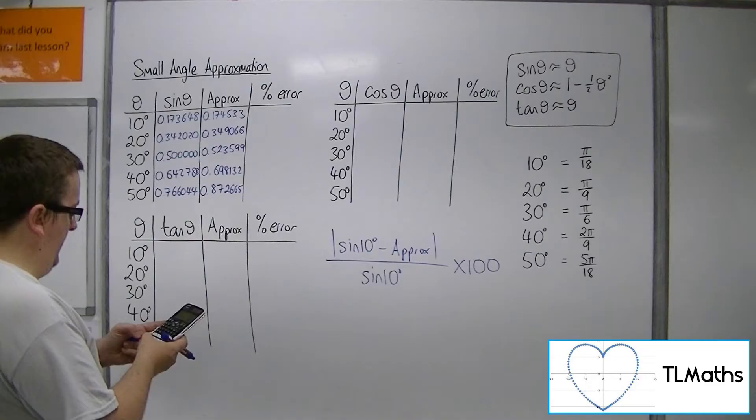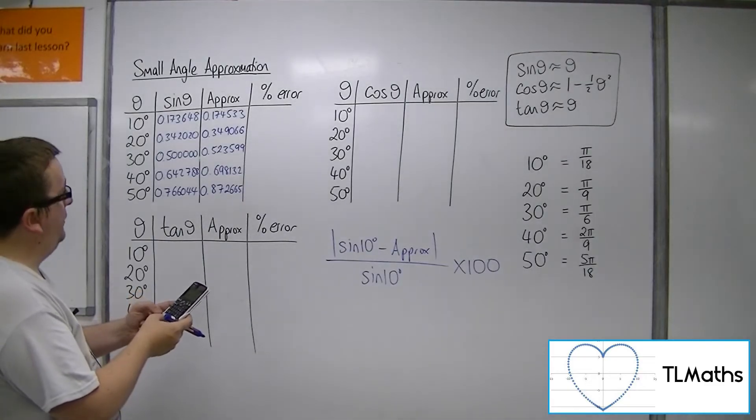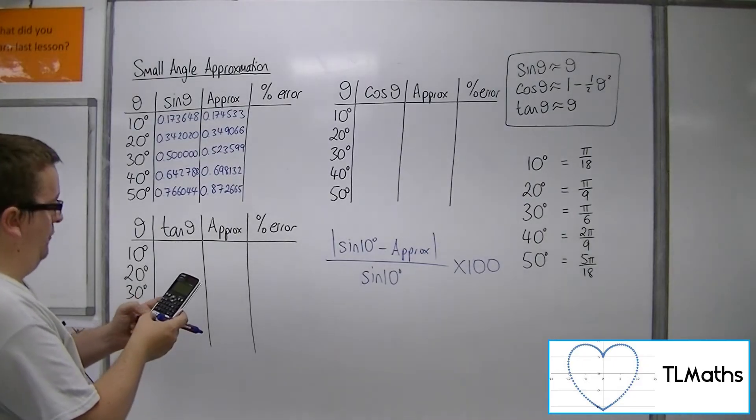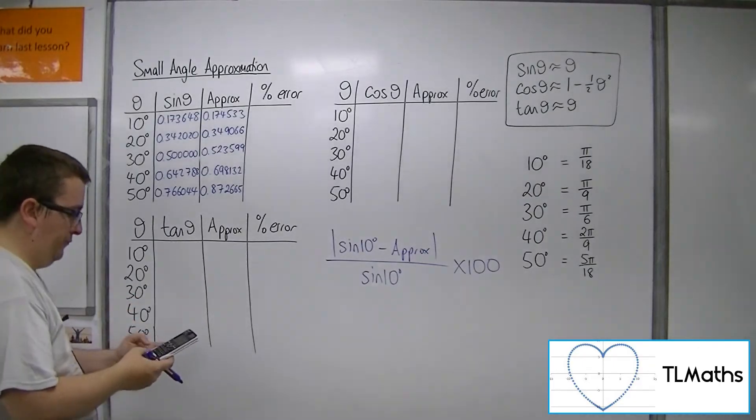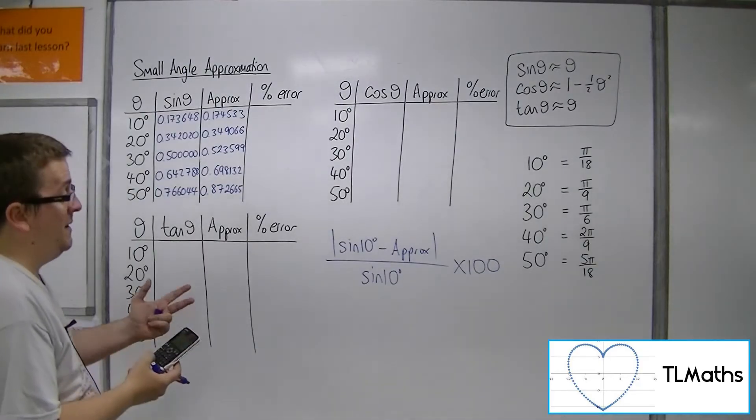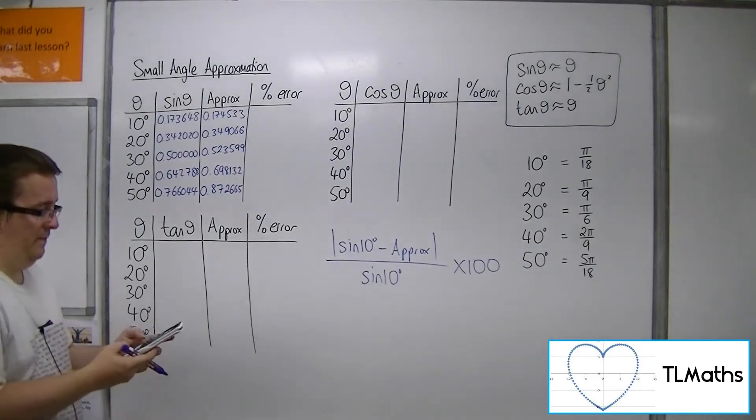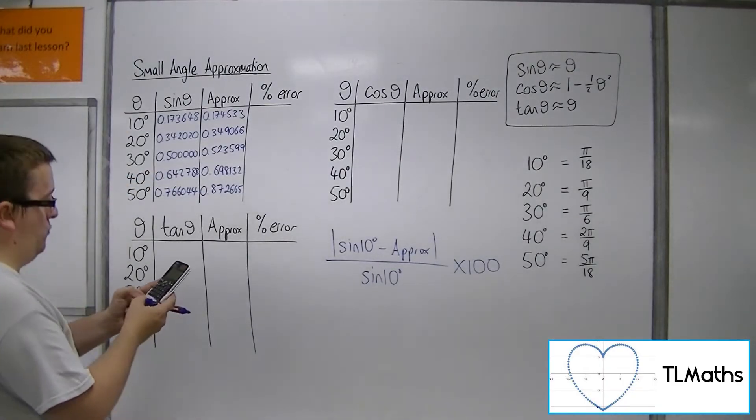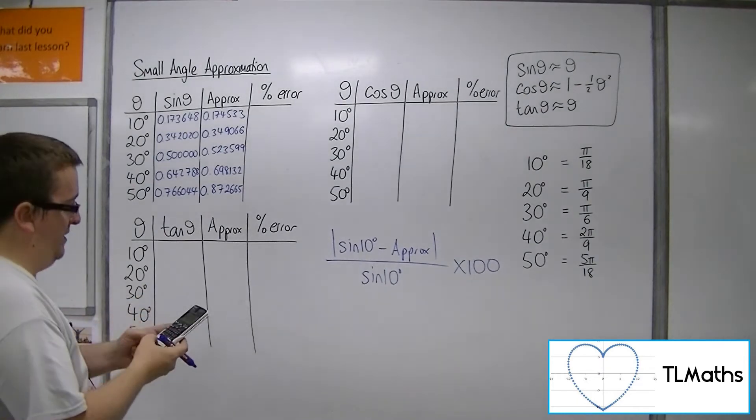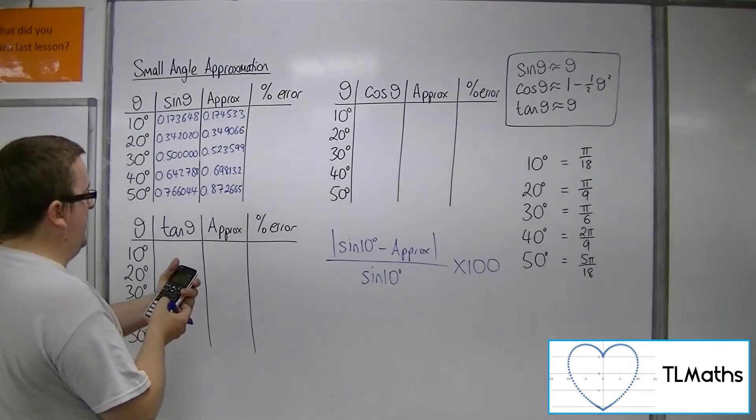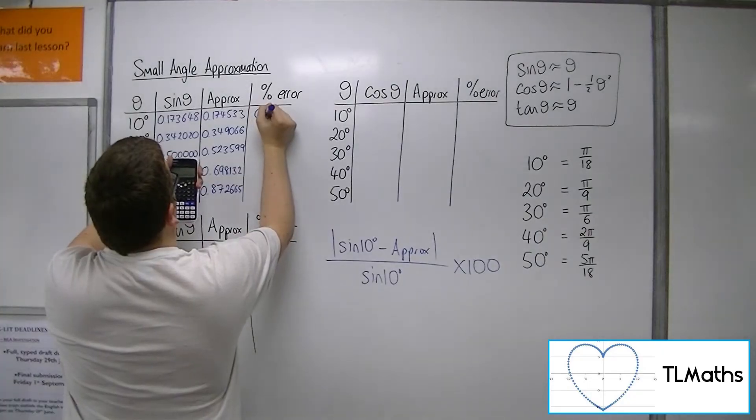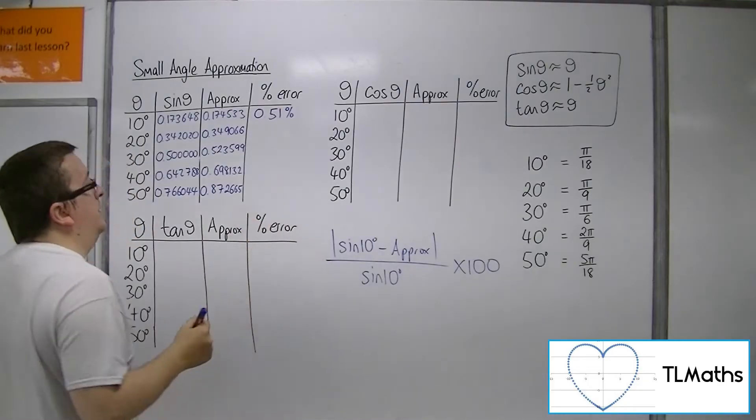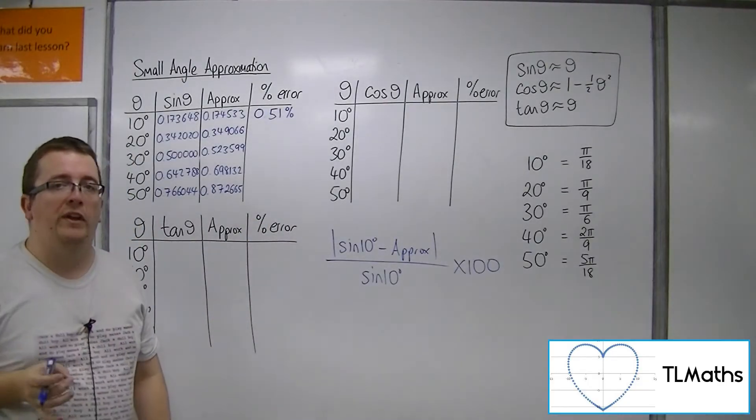So, we're going to have 0.173648, take away 0.174533. So that gets me a negative result, I've multiplied by minus 1 to make it positive. Then I'm dividing that by the original amount, 0.173648, and then timesing that by 100 to get my percentage error of 0.51%. So it's only half a percent out.